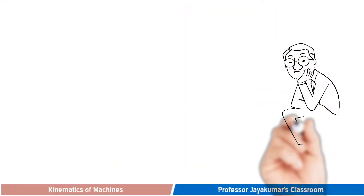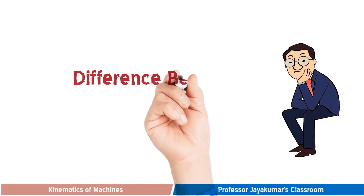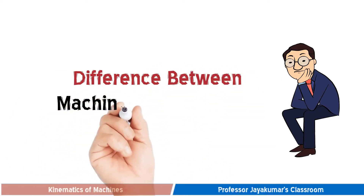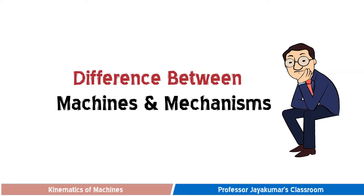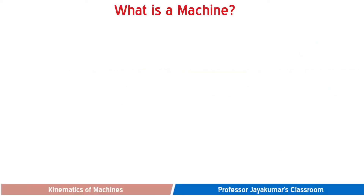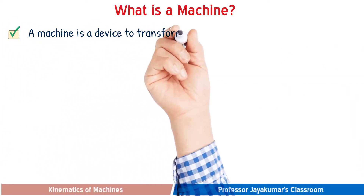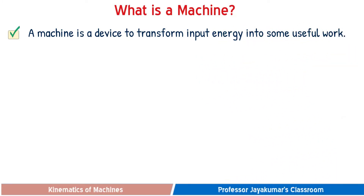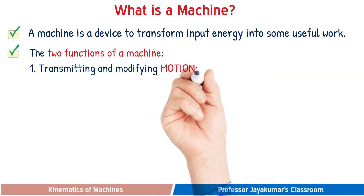Having studied the scope of kinematics of machines and introduction to KOM in our two earlier lecture videos, in this video we are going to discuss the key differences between mechanism and machine. We use machines in all our walks of life. Let us understand the meaning of the term machine — it is a device to transform input energy into some useful work.